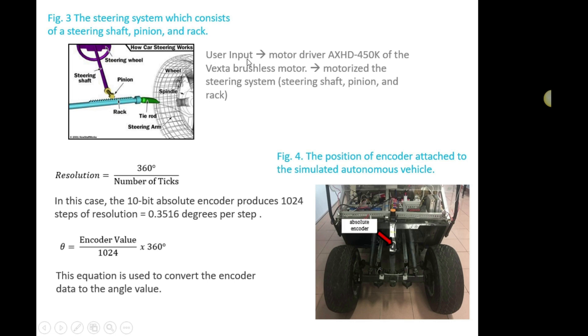The user gives input to the system, the controller receives it and generates a signal to the motor driver, which channels the output to the Vexstar brushless motor. The motor motorizes the steering system consisting of steering shaft, pinion and rack. This is the autonomous vehicle that has been used to test this simulation in the lab.